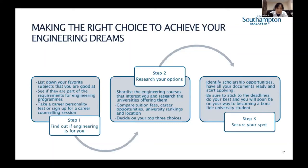Step two: research your options. Most students know they want to do engineering but aren't sure which discipline. Shortlist the engineering courses that interest you, research the top universities offering them, and compare your financial situation — tuition fees and future career opportunities. Top universities often lead to better career opportunities. Once you decide on your top three choices, streamline your thoughts and move to step three.